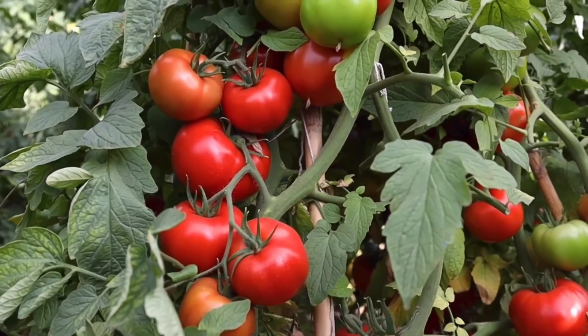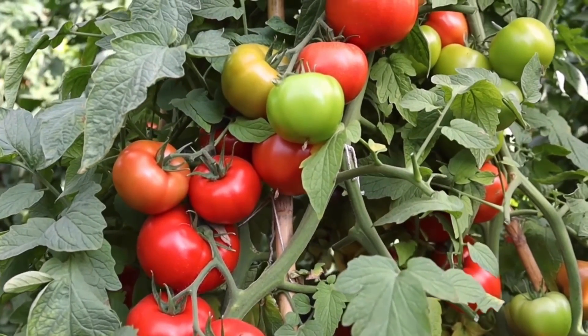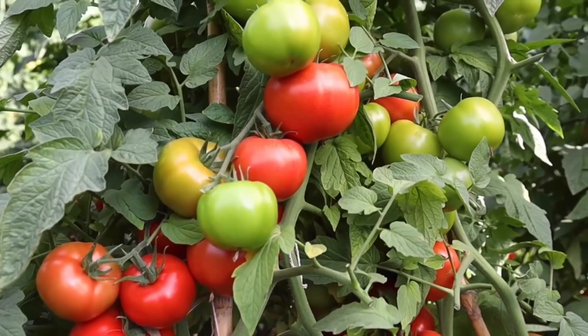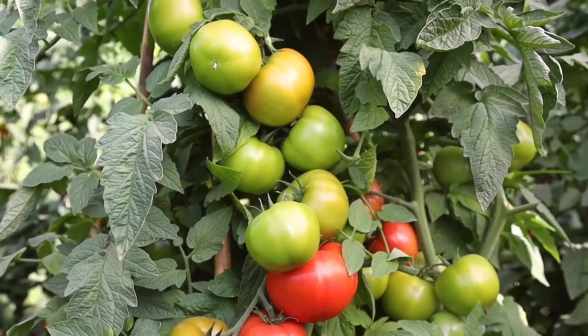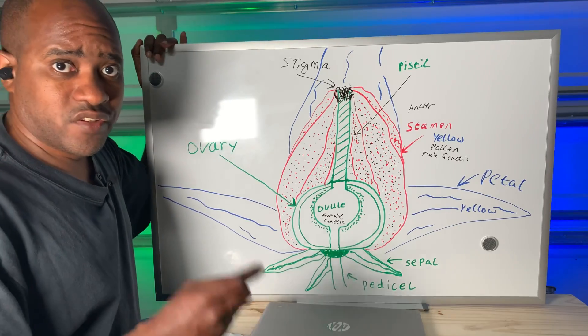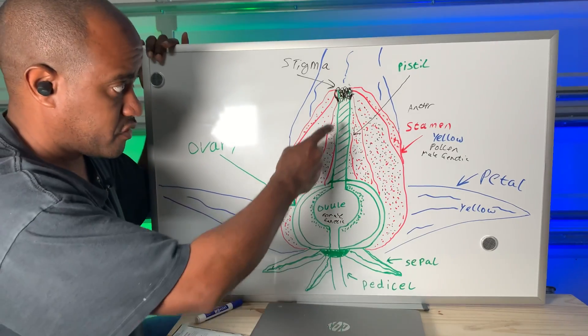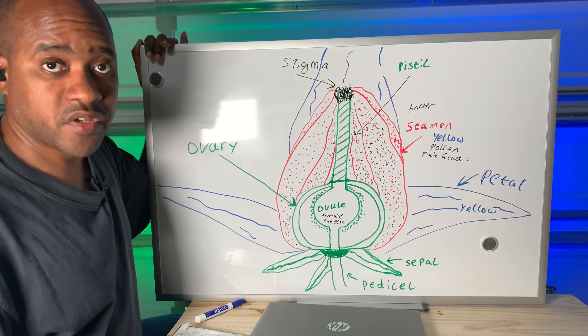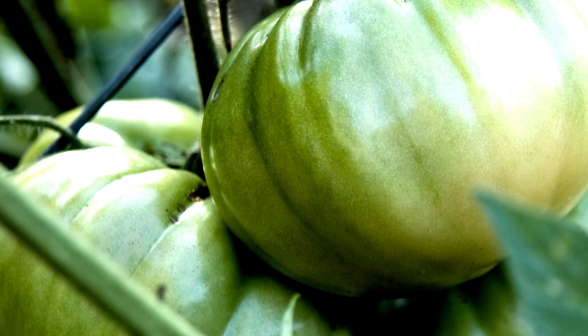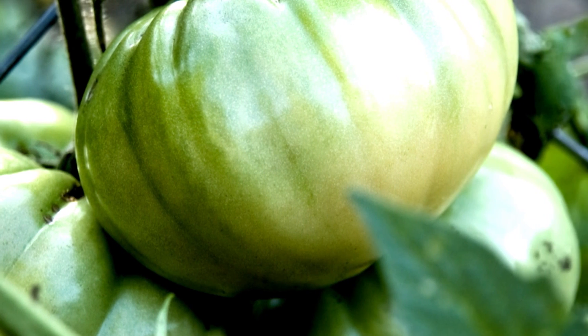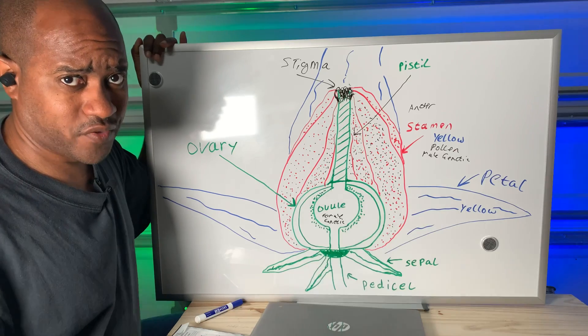A parthenocarpic tomato, on the other hand, doesn't need pollination from the stamen. They actually set fruit without pollination, and because of that they have very little seed — in fact most parthenocarpic tomatoes, like certain seedless varieties, don't have the male genetics to produce seeds. If they were pollinated by a bee or maybe by the wind, then of course they could set fruit. Parthenocarpic tomatoes are really good if you're having problems in whatever area you're living in and your plants are not setting fruit very well.